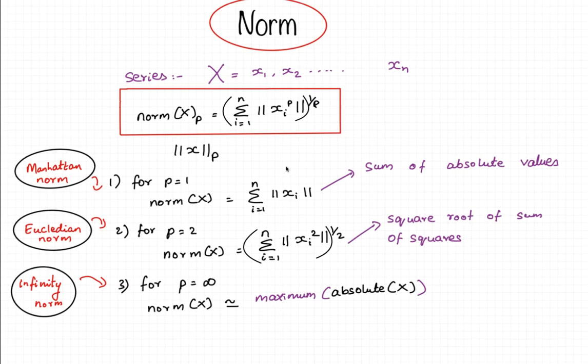Before we dive deep into types of losses, I would like to briefly discuss what is meant by a norm of a vector. Consider a series or a vector of terms x1, x2 up to xn. The norm of this particular element x with the base p is nothing but the sum of individual terms raised to the power p, the whole root of p.